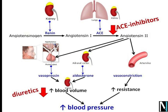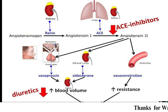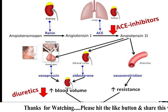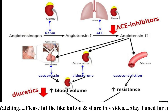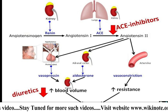The activated JG cells release renin, which converts angiotensinogen in the blood into angiotensin I. Angiotensin I is further converted into angiotensin II by the enzyme angiotensin converting enzyme (ACE). Angiotensin I is lesser active compared to angiotensin II.